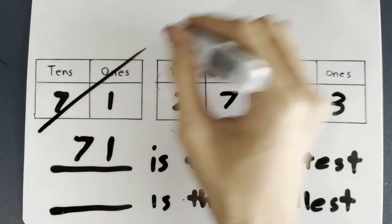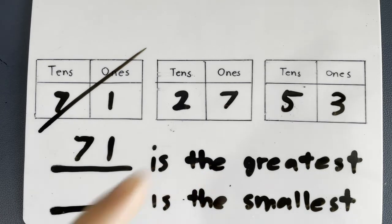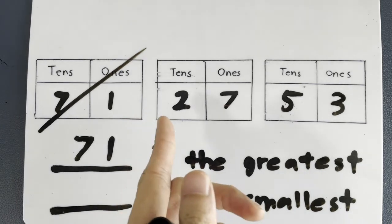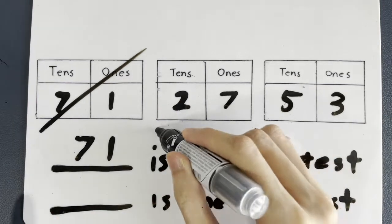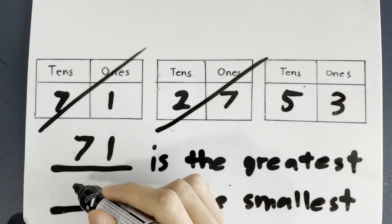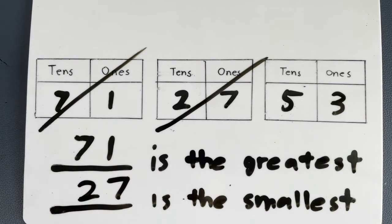So we cancel that off — no more, we're not going to care about it anymore. Now which is the smallest? Look at the tens again. Is 2 the smallest or 5 the smallest? It's 2. So 27 will be the smallest number.